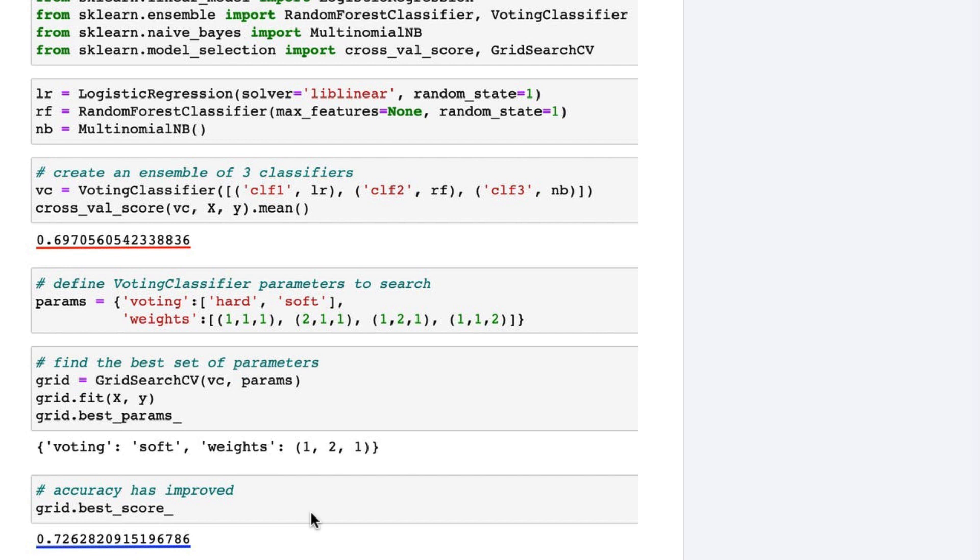This can be done as part of the same GridSearch, but when adding to the params dictionary, you will have to reference the model parameters using double underscore notation. For example, you would use CLF3 underscore underscore alpha to reference the alpha parameter of the naive Bayes classifier.